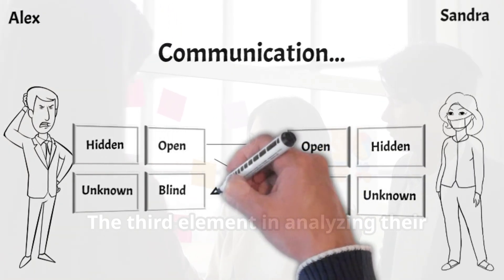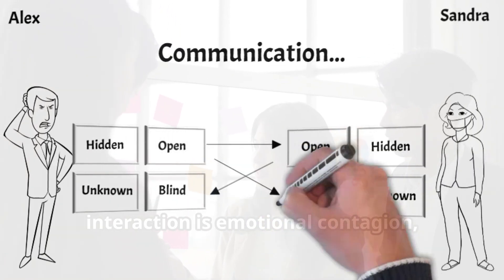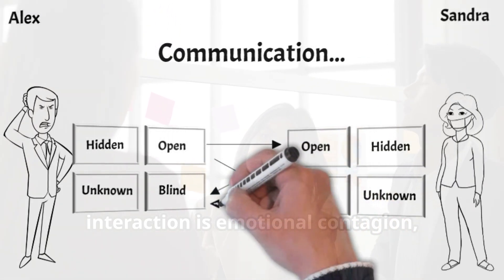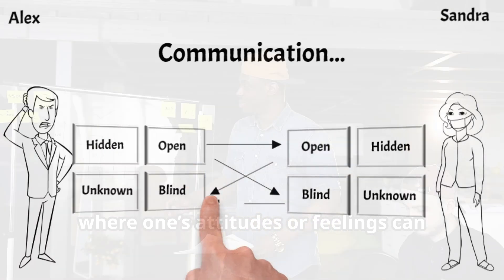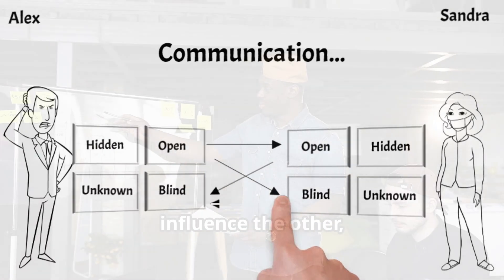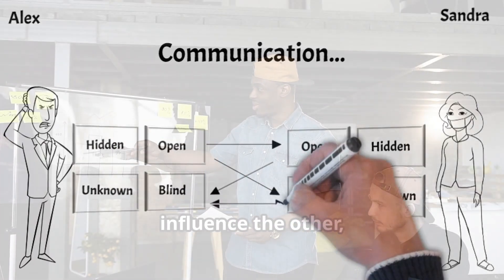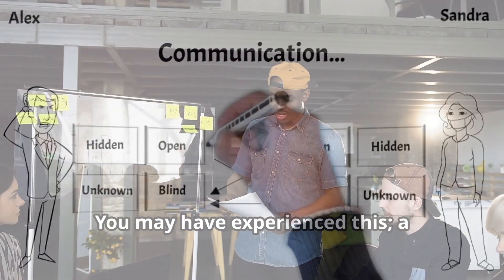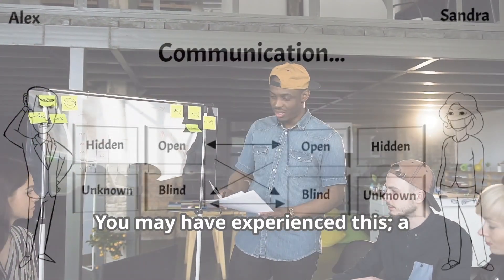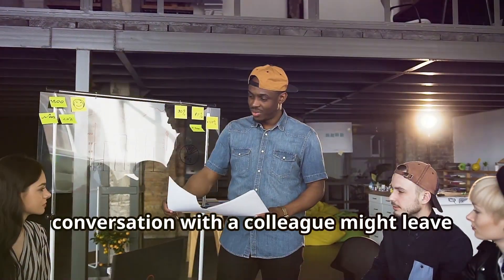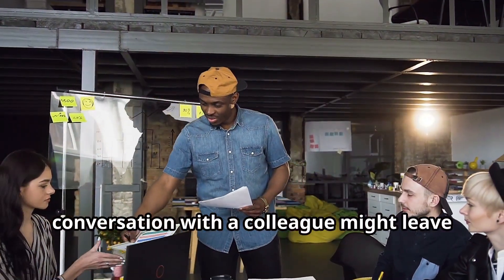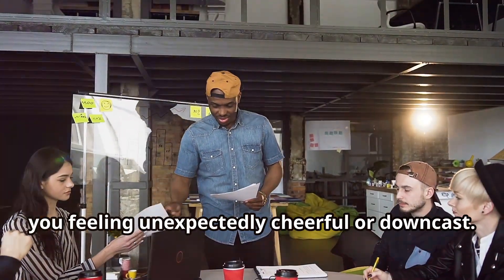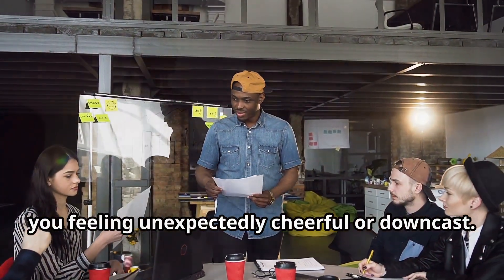The third element in analyzing their interaction is emotional contagion, where one's attitudes or feelings can influence the other, often unconsciously. You may have experienced this — a conversation with a colleague might leave you feeling unexpectedly cheerful or downcast.